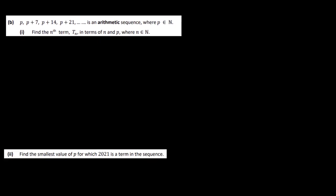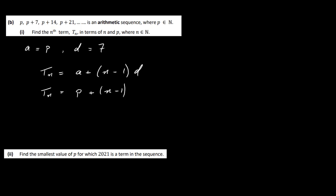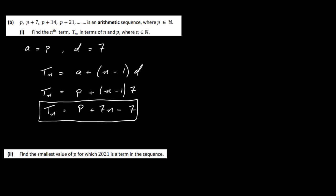Part B gives an arithmetic sequence: p, p plus 7, p plus 14, p plus 21, and so on, where p is a natural number. We're adding 7 each time, so the first term a equals p and common difference d equals 7. Using the formula tn equals a plus (n minus 1)d, we get tn equals p plus 7n minus 7.